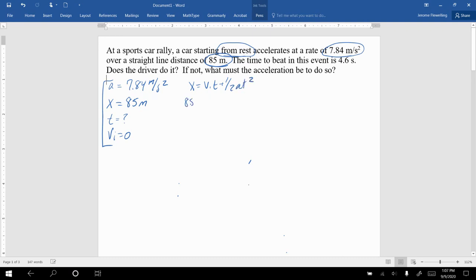So we have our X value of 85. Our initial velocity is 0, so one half of the acceleration, 7.84, times the time squared. Remember, we're looking for the time.